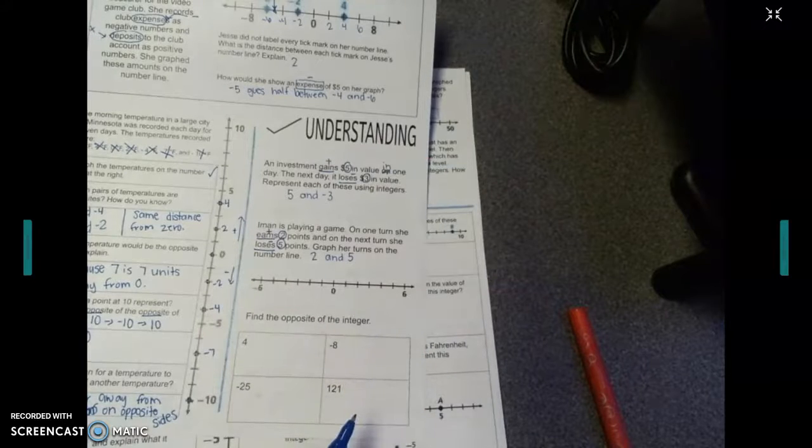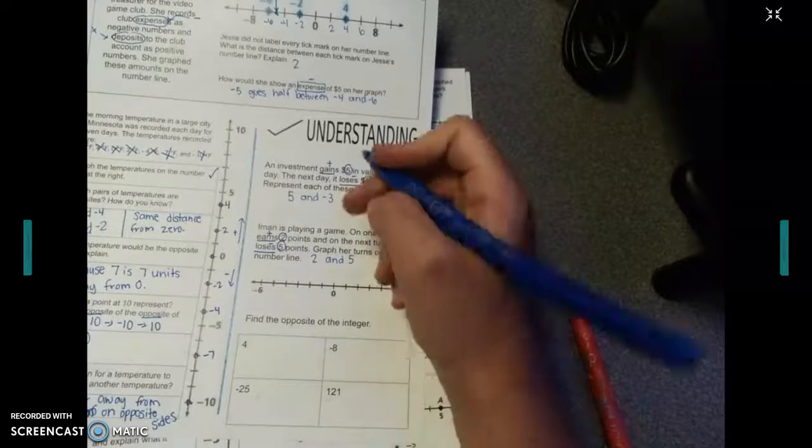And now we're going to put them on the number line. Let's make sure we count to make sure they're not counting by anything random. 1, 2, 3, 4, 5, 6. So we're counting by 1s. Sorry, this should be negative 5.